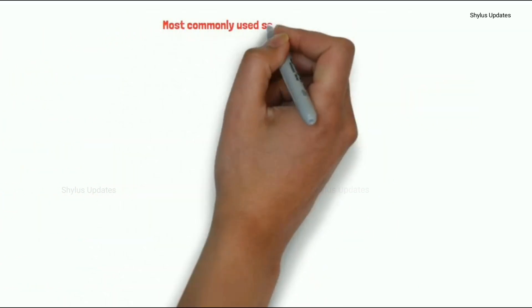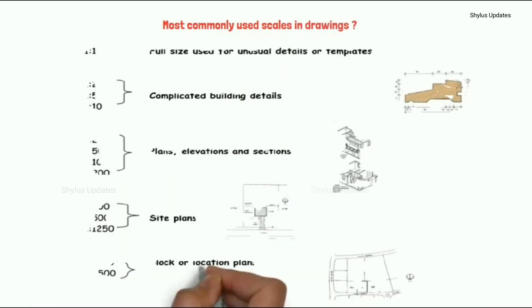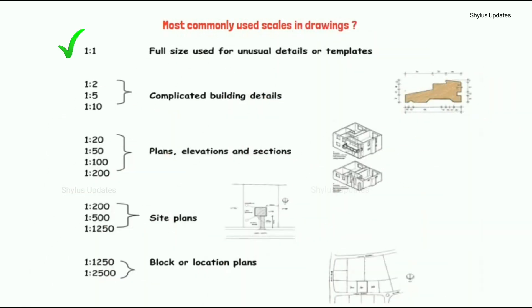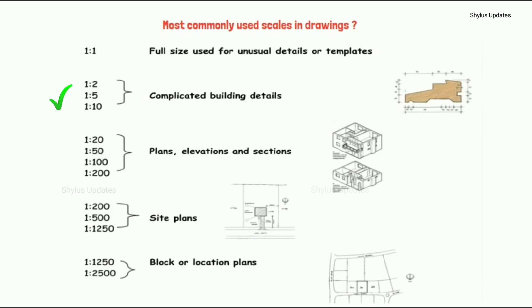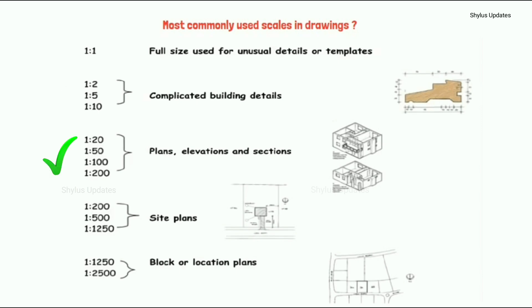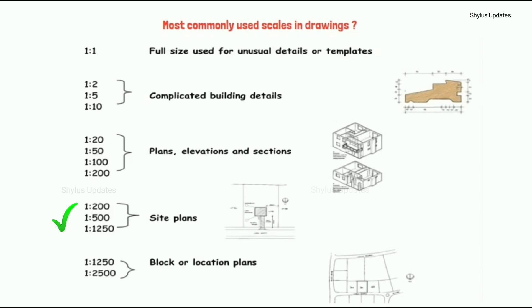Most commonly used scales in drawings: First, 1 to 1 — full size — is used for unusual details or templates. Next, 1 to 2, 1 to 5, and 1 to 10 are used for complicated building details. Next, 1 to 20, 1 to 50, 1 to 100, and 1 to 200 are used for plans, elevations, and sections. Next, 1 to 200, 1 to 500, and 1 to 1250 are used for site plans.